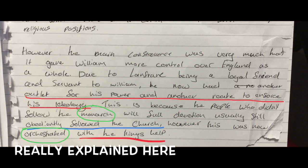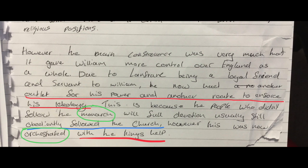This next one is the same person but they've gone further - hopefully you can see the difference. This is more like those fives and sixes going to sevens and eights: 'however, the main consequence was very much that it gave William more control over England as a whole.' That little phrase 'as a whole' is clever. 'Due to Lanfranc being a loyal friend and servant to William, he now had another outlet for his power and another route to enforce his ideology.' In historical terms, this is because the people who didn't follow the monarch with full devotion usually still obediently followed the church, however the church was now orchestrated and controlled with the king's help. They could have gone a bit further to get that seven, eight or nine - say 'so therefore William had gained a tool he could use to help him control England and this was a huge consequence' - just that little step further. But this is really good, really clever stuff.